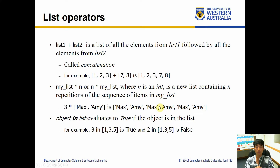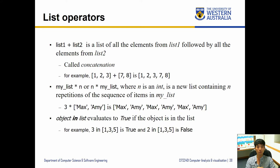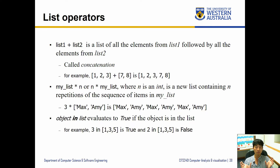Similar to string operators, list operators have similar characteristics. Here you have the addition where you can add two lists together, and that does the concatenation of lists — the second list gets added at the back of the first list to create one large list.